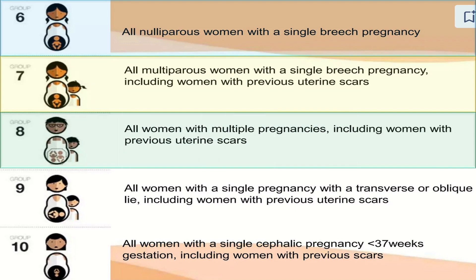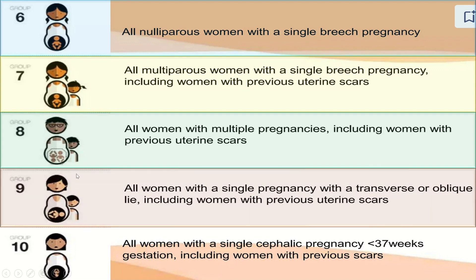Group eight is for multiple pregnancies — the number eight being a combination of two circles is a helpful memory aid. All women with multiple pregnancies, including women with a previous uterine scar, are included in group eight. The unique point about group nine is that the baby may be either transverse or oblique. All women with a single pregnancy with a transverse or oblique lie, including those with previous uterine scars, are included in group nine.